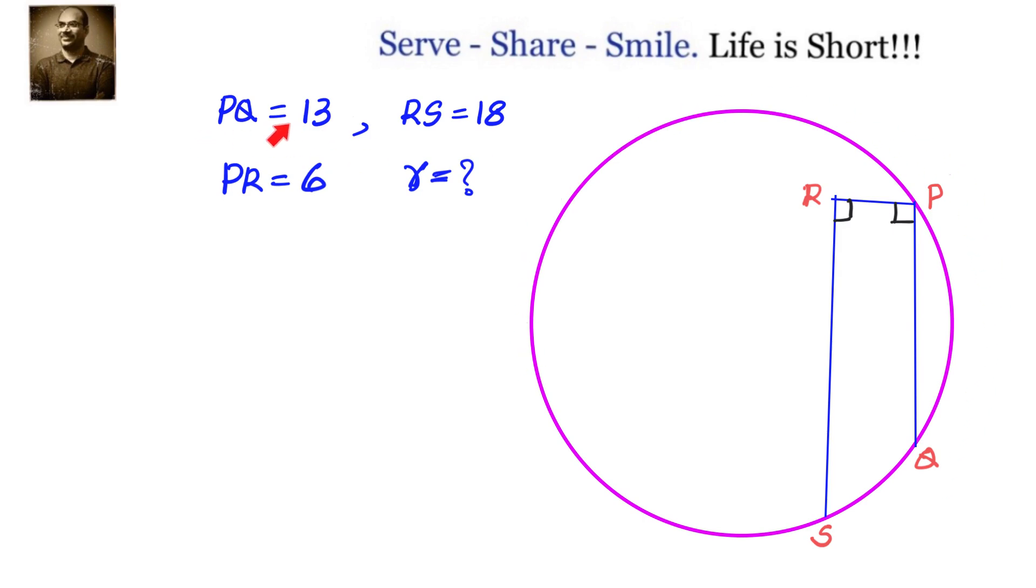We have a circle in which PQ is a chord of length 13 units and RS is parallel to PQ. The length of RS is 18 units and the distance between them is given by PR which equals 6 units. We have to find out the radius of the circle.